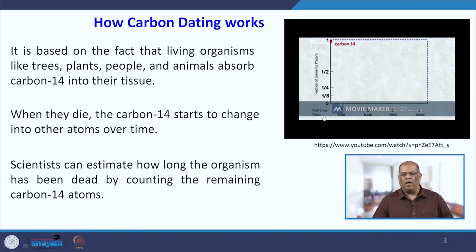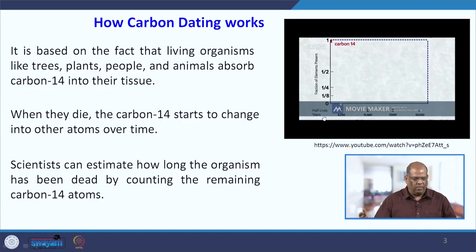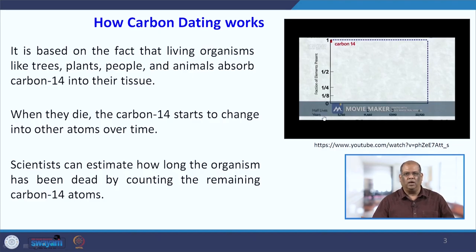Both carbon-12 and carbon-14 behave alike, but there is one attribute that separates them: carbon-14 is unstable. When a person or animal dies, this carbon-14 starts to disintegrate, and it takes approximately 5730 years to reduce the carbon-14 to half of its original amount. We call this the half-life of carbon-14.